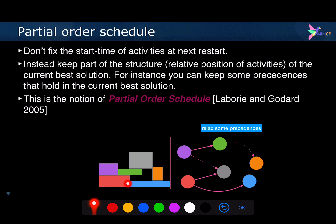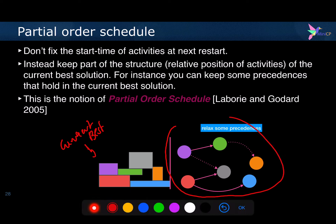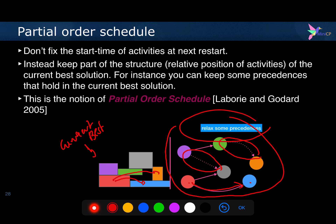Assume this is the current best solution. I will create a precedence graph — the blue one is coming after the pink one, so I have this arc, and this one is coming after, and so on. I have a graph with all the precedences that can be deduced from the current best solution. I will then randomly remove some of the arcs present in the precedence graph, relaxing some precedences, while the remaining ones are imposed. So I am keeping the structure of the current best solution but still allowing some flexibility to improve the makespan.